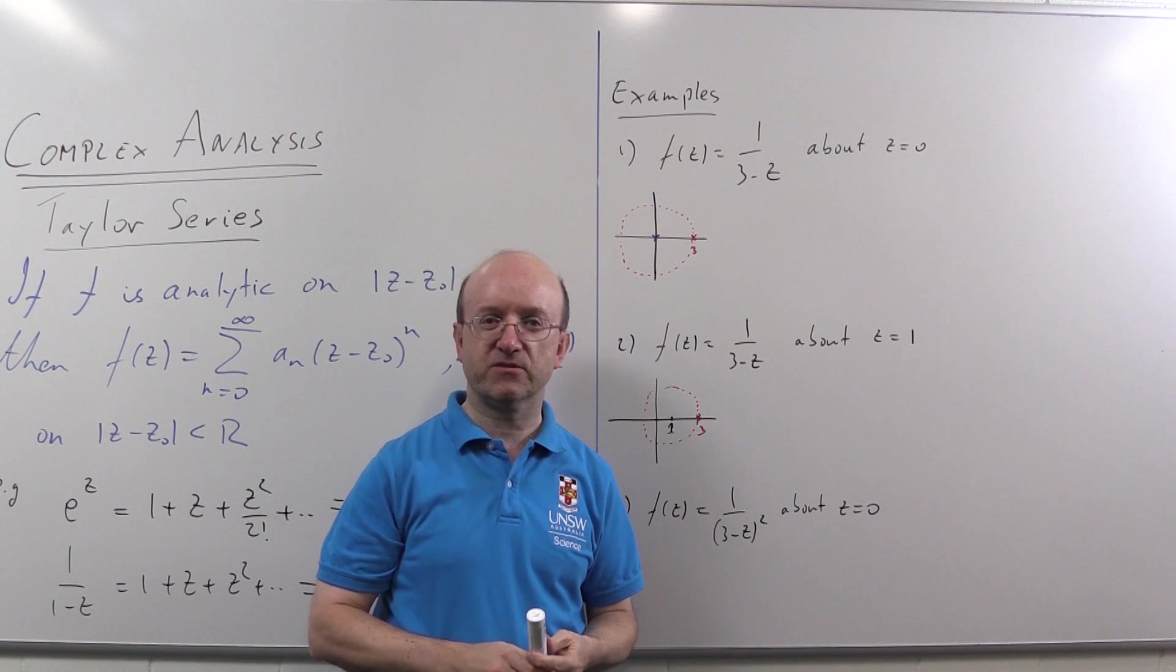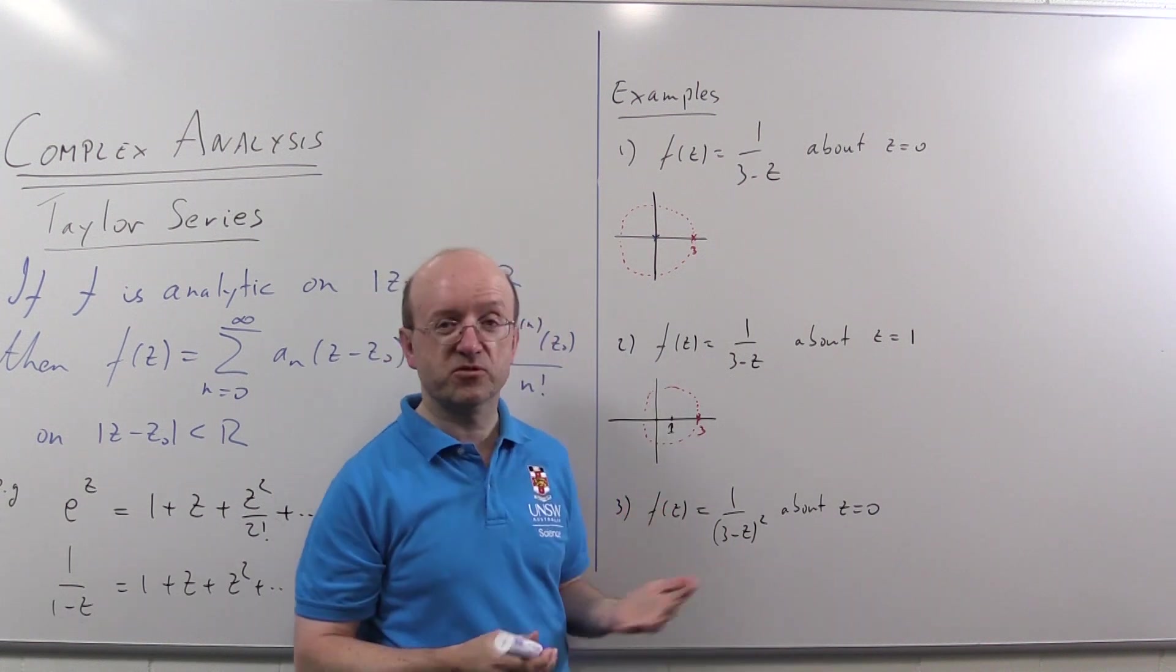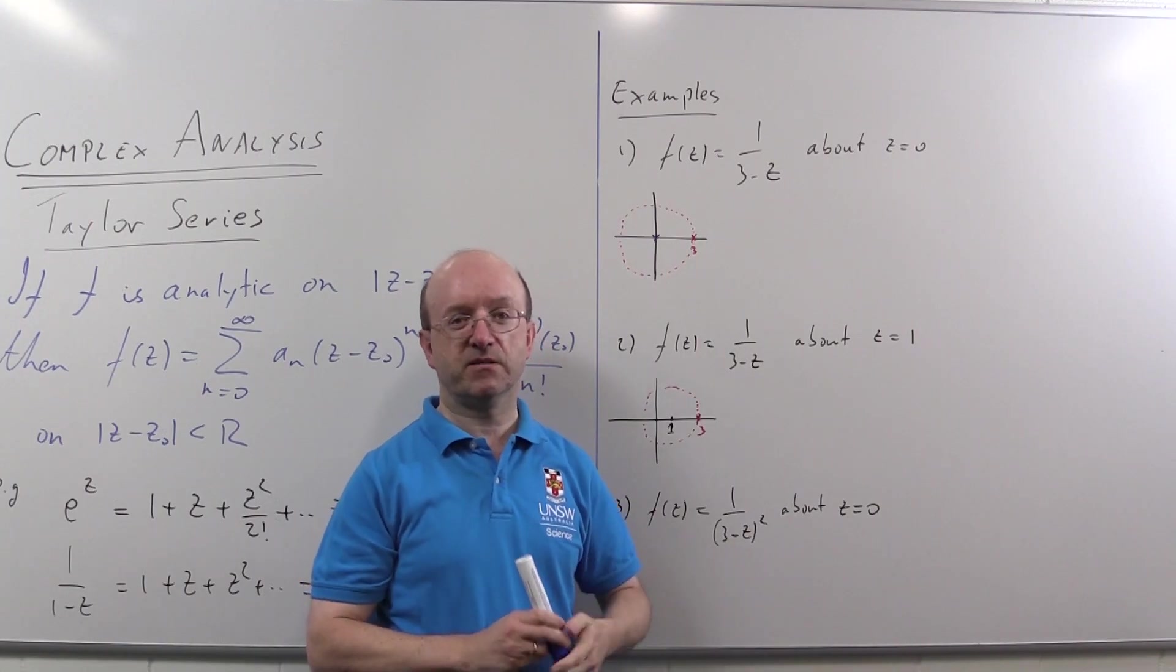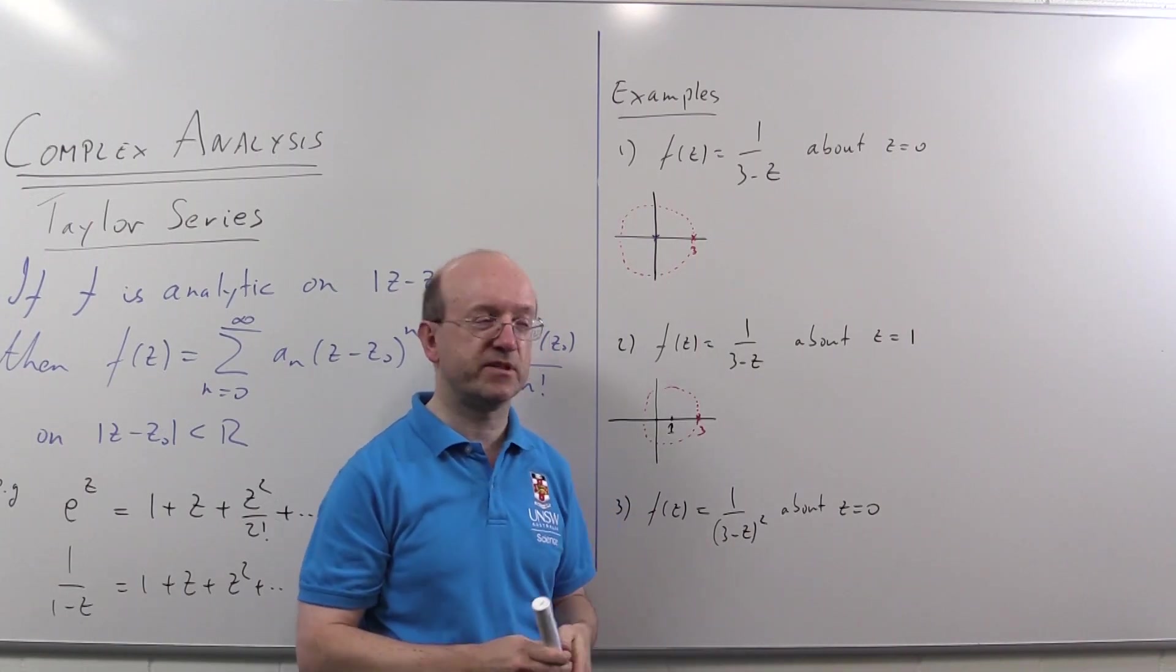And clearly the disk is going to be the disk mod z less than three. It's always very easy to tell when Taylor series converges in the complex plane. You're just measuring distances from the point of expansion, the z naught, out to the nearest singularity. And inside that disk, you'll have a Taylor series.